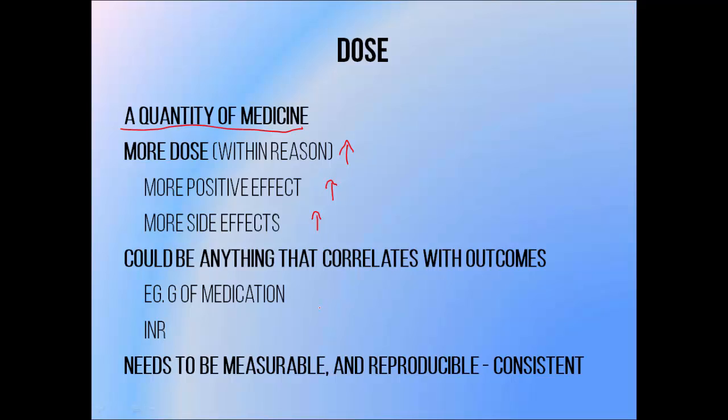The outcomes of radiation treatments also vary a great deal with the amount of radiation used, so we need a similarly accurate measure of dose. The quantity that we use could be anything that correlates with the outcomes, is also measurable, and is reproducible as well. It defeats a lot of the purpose of working out how well one dose works on one group of patients, if we can't give that same dosage again later on, or on other groups of patients as well.